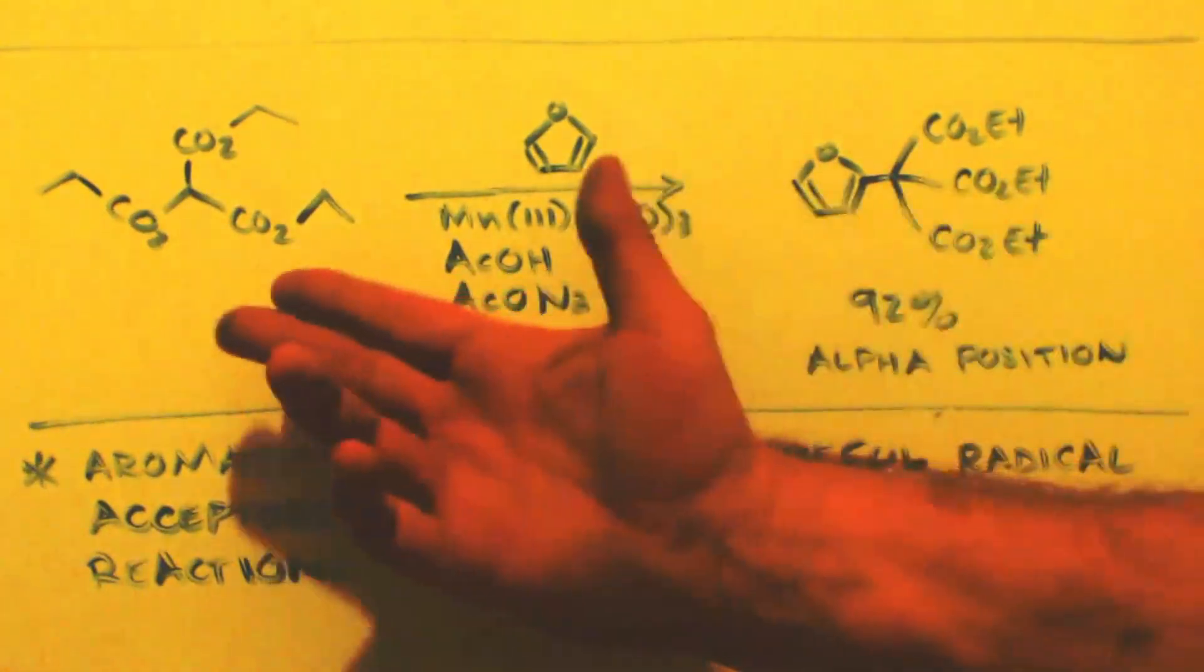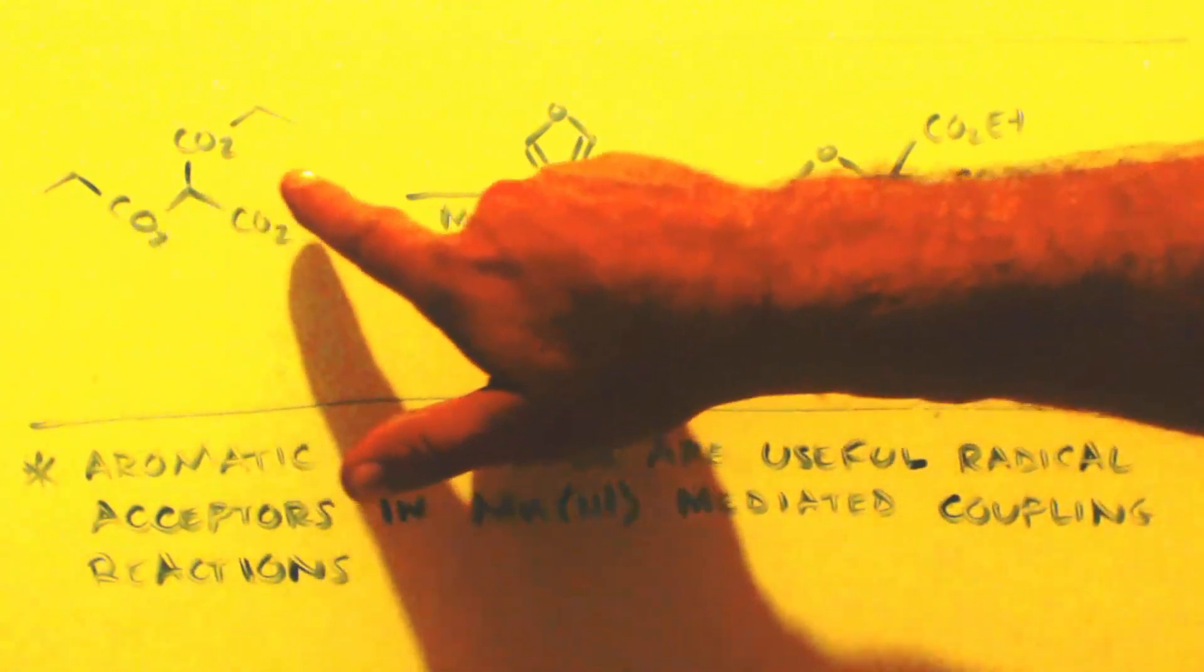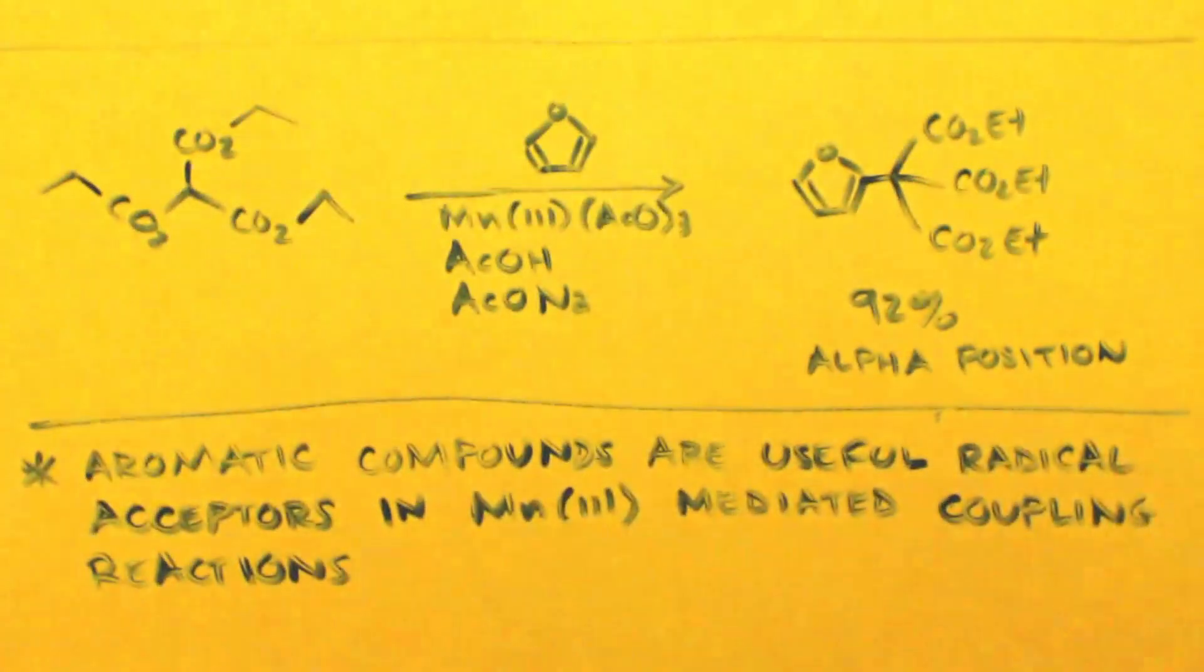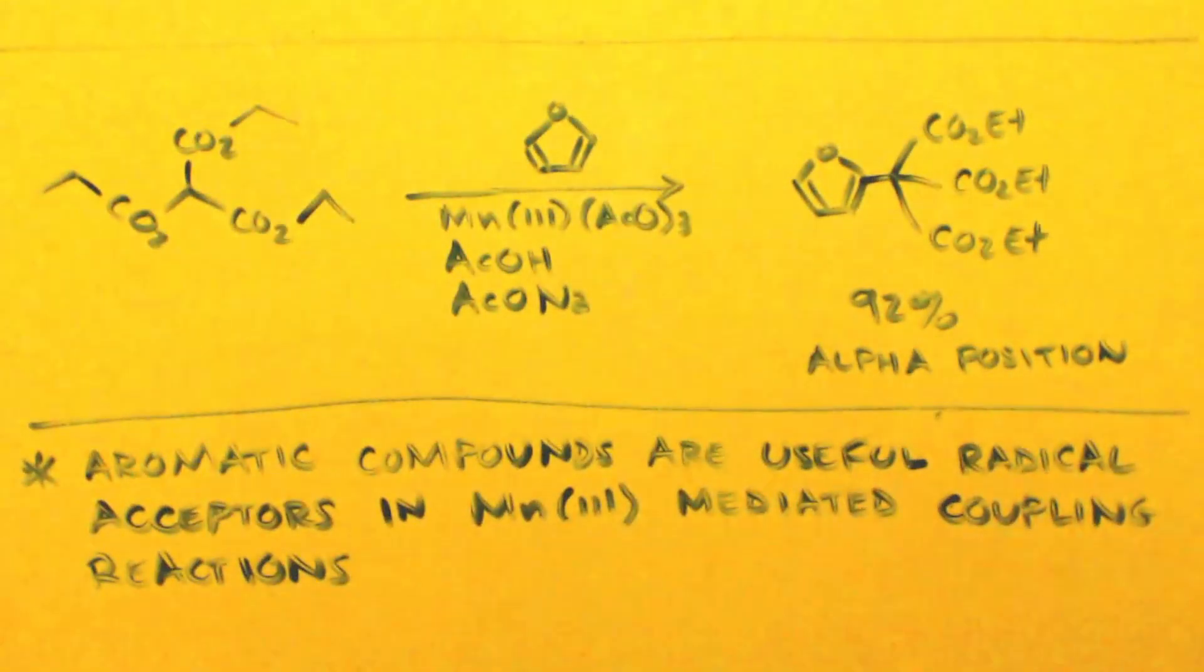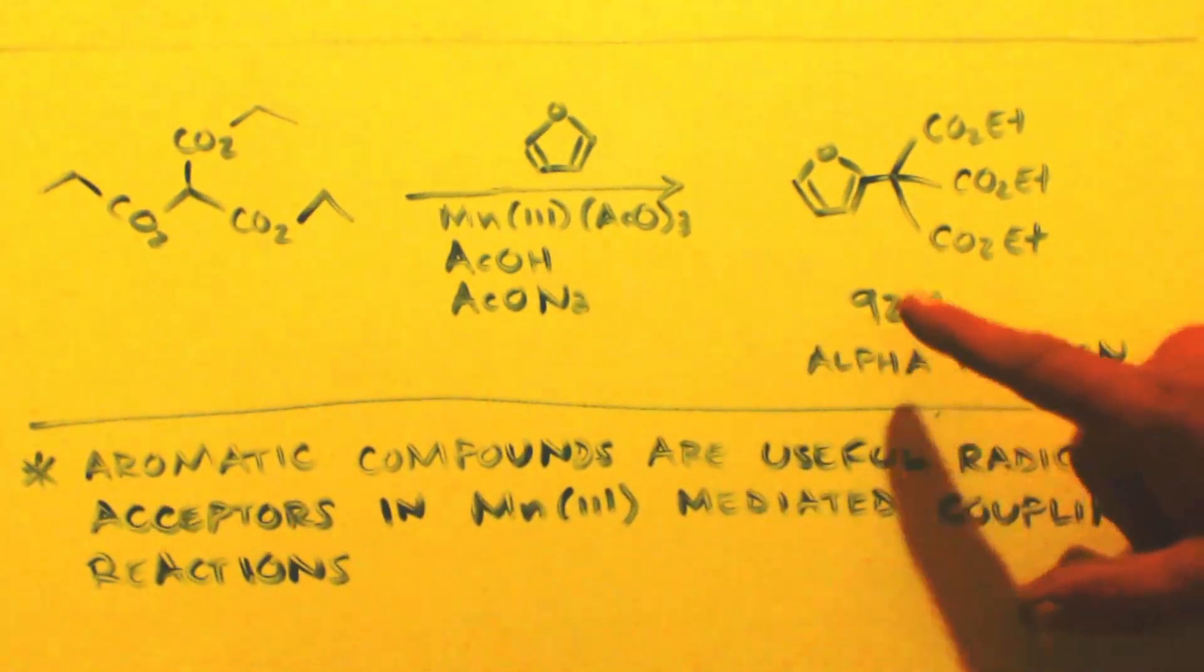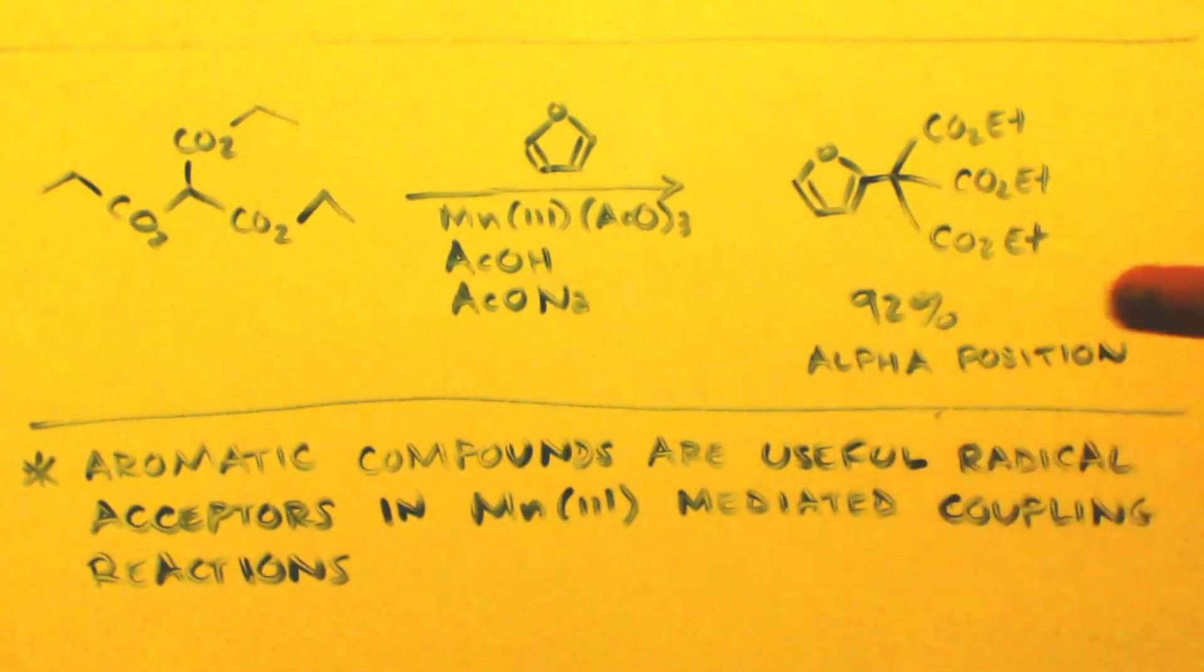And it gives this example right here. And you can see instead of a ketone, it uses an ester as the carbonyl compound. And you can see it gets 92%. This is the aromatic compound it gives an example of, alpha position. It's 100% alpha position, you get a 92% yield. So it works really well.